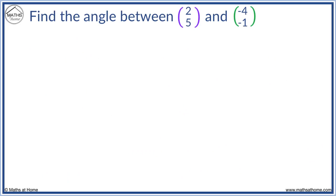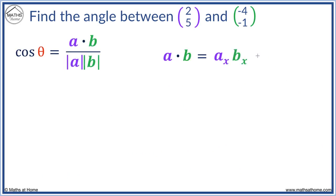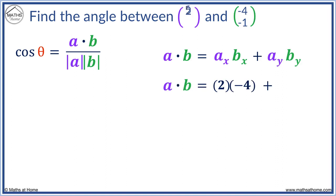In this example we find the angle between (2, 5) and (-4, -1). a dot b is found first. ax is 2, bx is minus 4, ay is 5, and by is minus 1. Two times minus four equals minus eight, and five times minus one is minus five. Minus eight minus five equals minus thirteen.